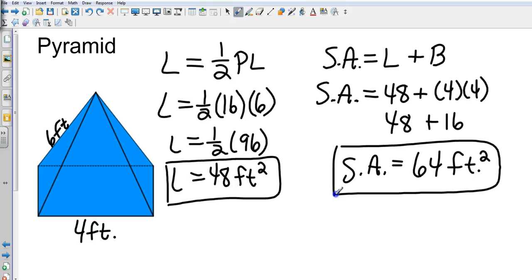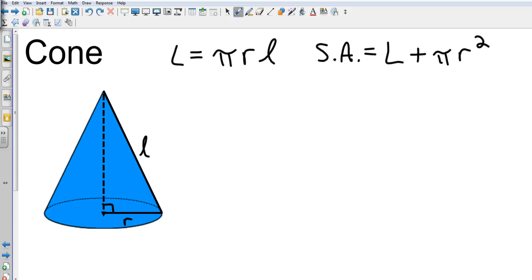And now we're going to move on to our last one, which is a cone. So now we have a cone, ice cream cone, traffic cone, waffle cone, whatever you'd like that to be. Our letters in this one, lateral area is pi r l, again, l being the slant height, just like it was in the last example. And then surface area is lateral area plus the area of that circle that's on the bottom, which is going to be pi r squared.